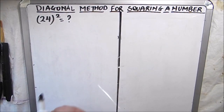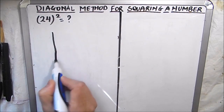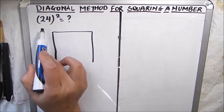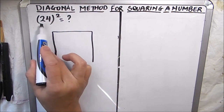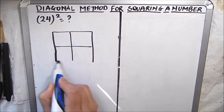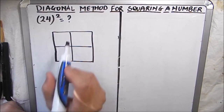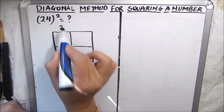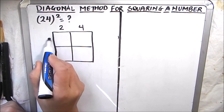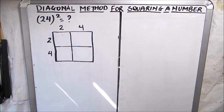The first step in the diagonal method is to make a two-by-two digit square, because we have to find the square of a two-digit number. This is our two-by-two square. The next step is to write the numbers on top — the tens digit and the ones digit — and vertically as well. So we write 2 here and 4 here, and our two-by-two square is complete with the numbers written.